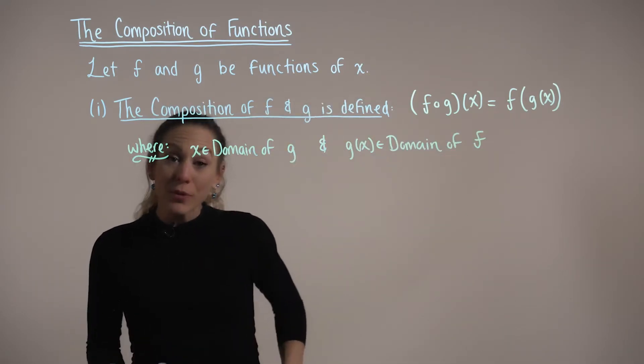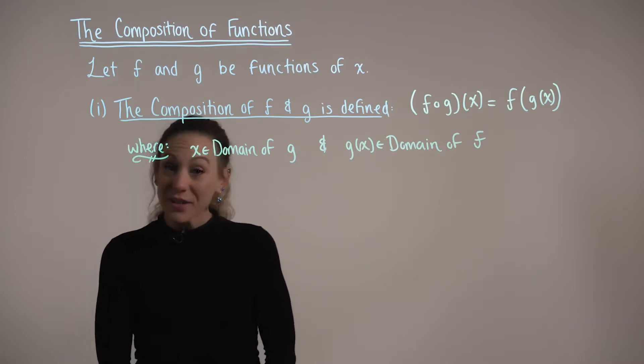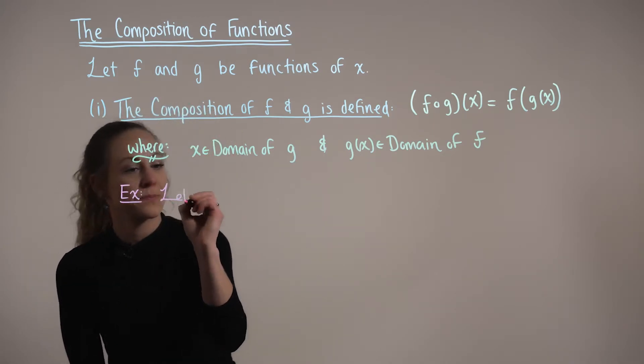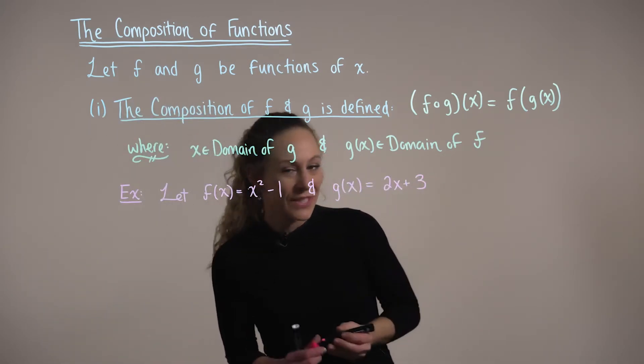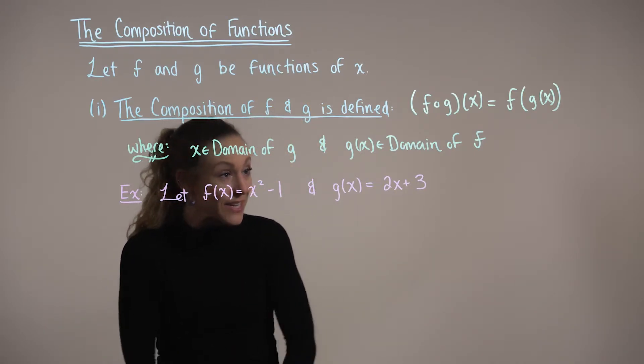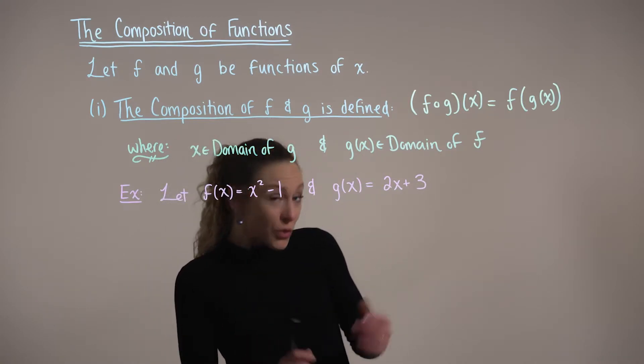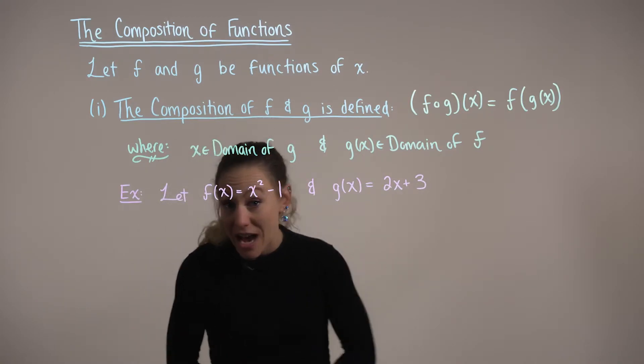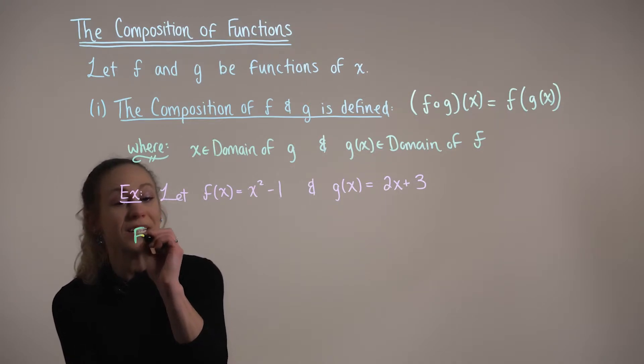So to help us better appreciate what's going on here, let's consider the following example. Suppose that we are given the functions f of x is equal to x squared minus 1, and g of x is equal to 2x plus 3. And our goal here is to find the composition.